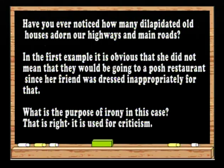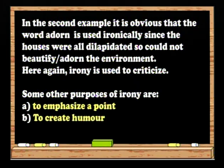Have you ever noticed how many dilapidated old houses adorn our highways and main roads? In the first example, it is obvious that she did not mean they would be going to a posh restaurant since her friend was dressed inappropriately. What is the purpose of irony in this case? That is right. It is used for criticism. In the second example, it is obvious that the word 'adorn' is used ironically since the houses were all dilapidated so could not beautify or adorn the environment. Here again, irony is used to criticize.